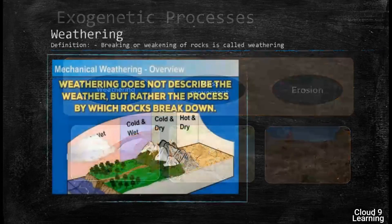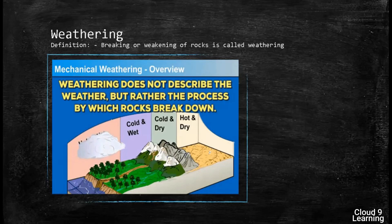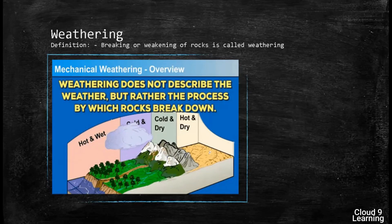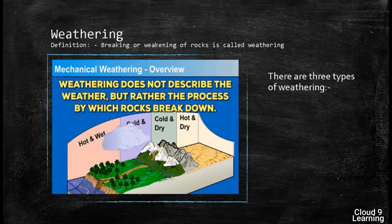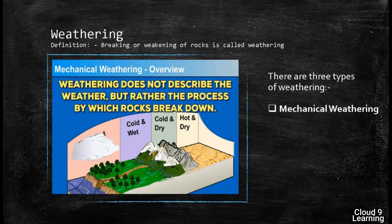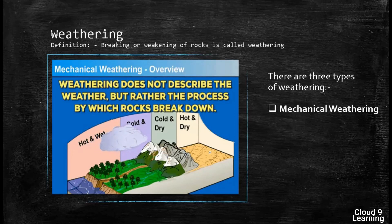Weathering is the breaking or weakening of rocks into smaller pieces. There are three types of weathering depending upon the region, the temperature of the place, and the type of rocks. The first one is mechanical weathering, also known as physical weathering. It takes place in arid climates or at places where the temperature is hot.